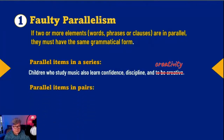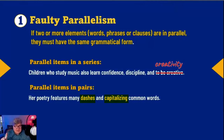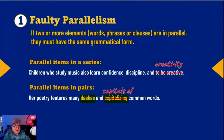Let's look at another one. This has to do with parallelism in pairs. Where poetry features: one, many dashes, and two, capitalizing. Many dashes is a noun phrase, so we need another noun phrase. Dashes and capitals — that'll do it.